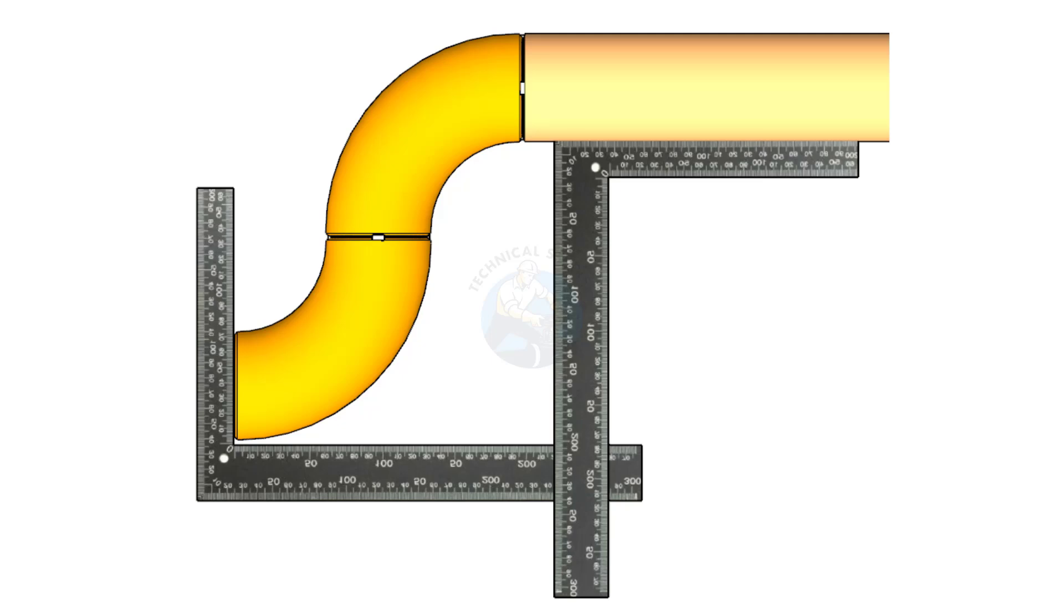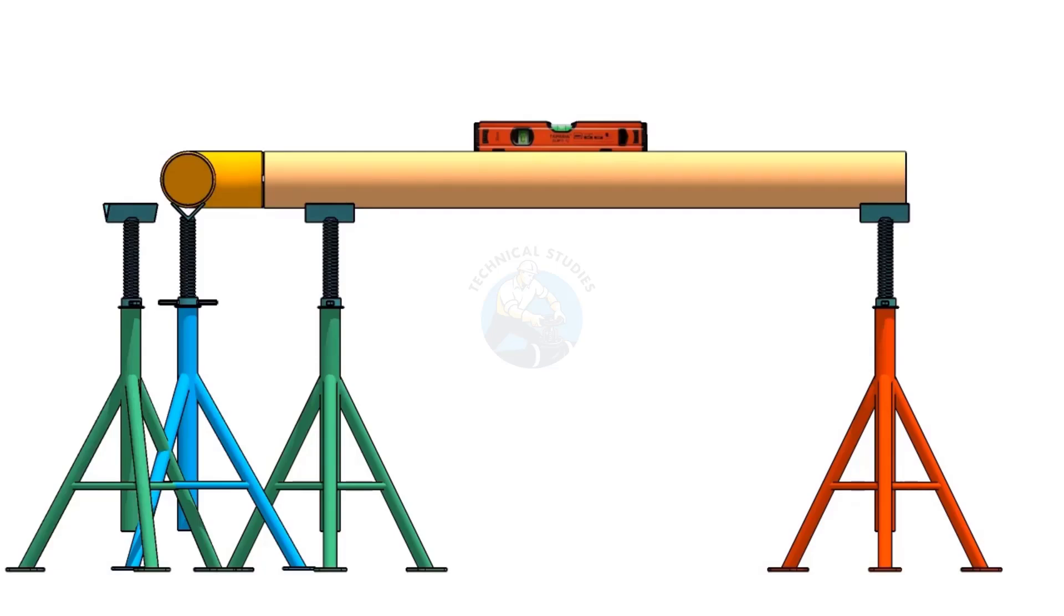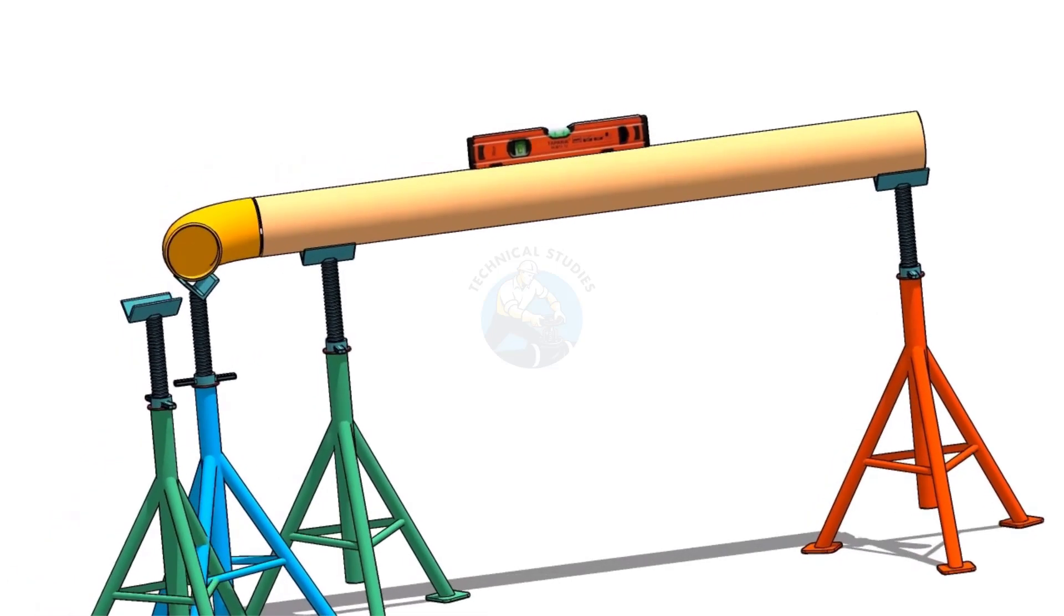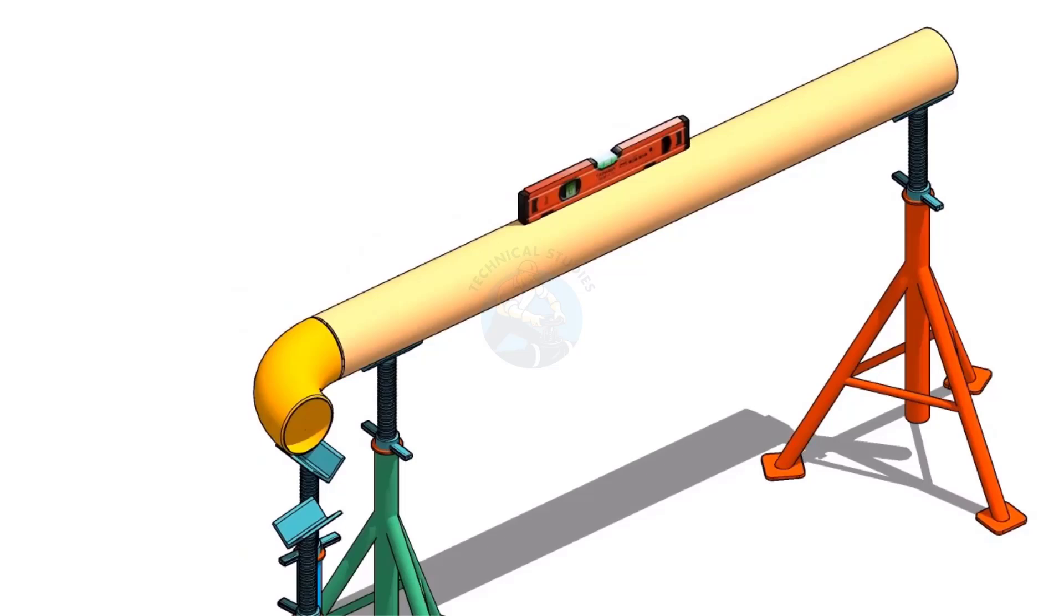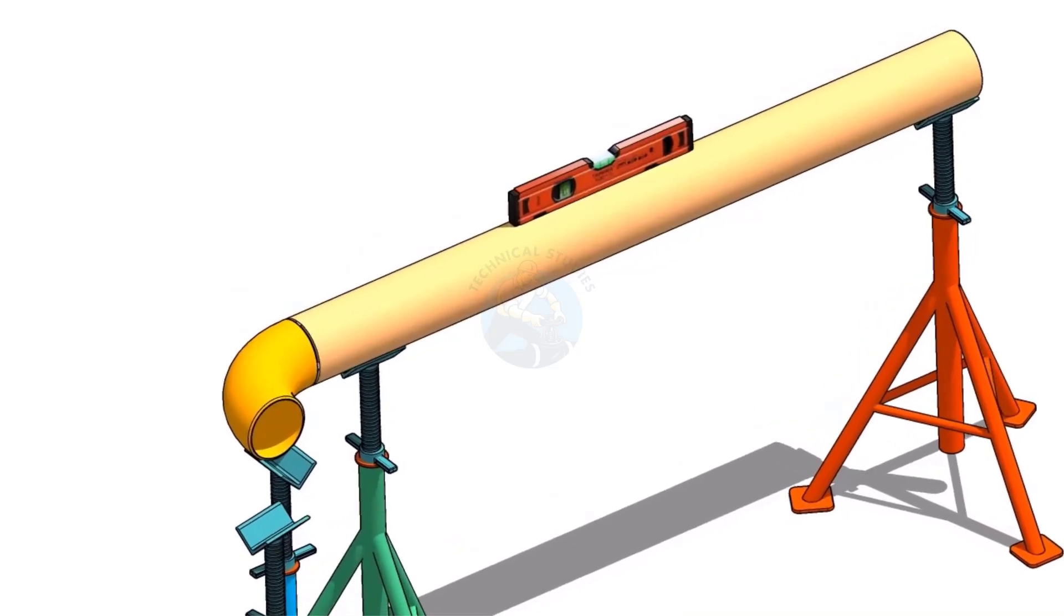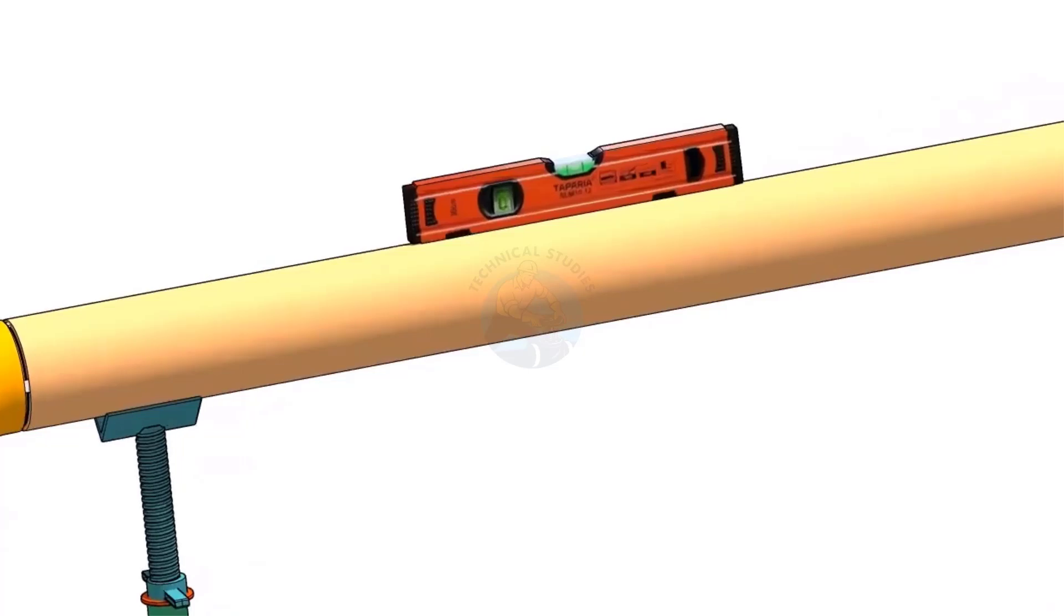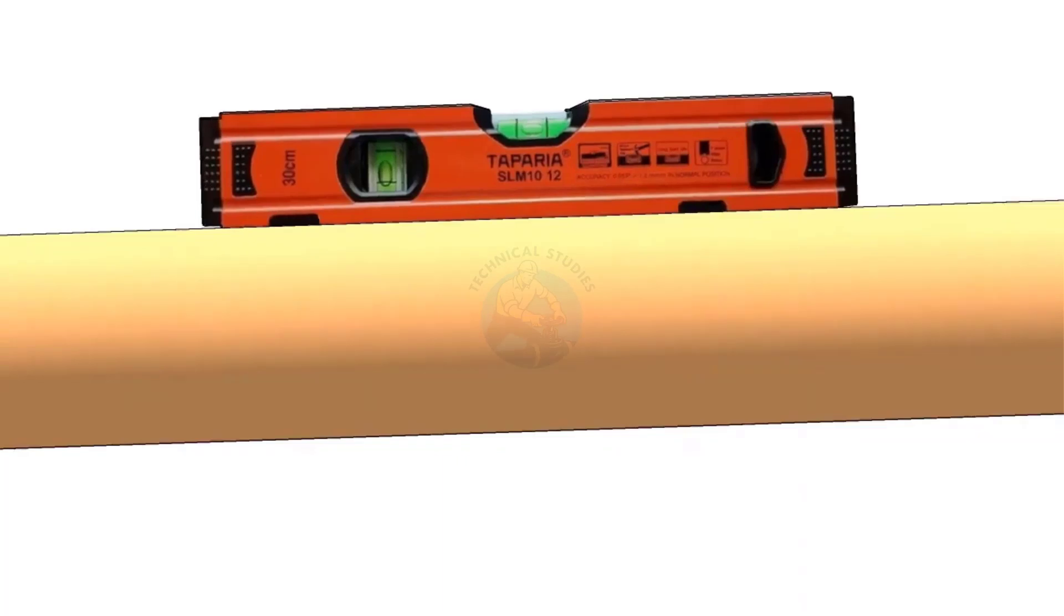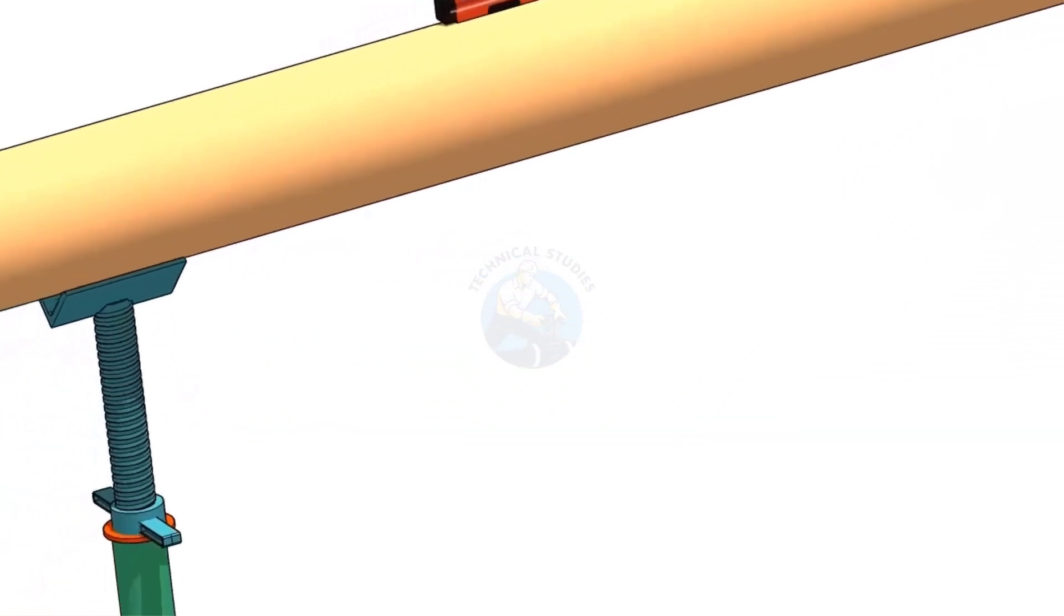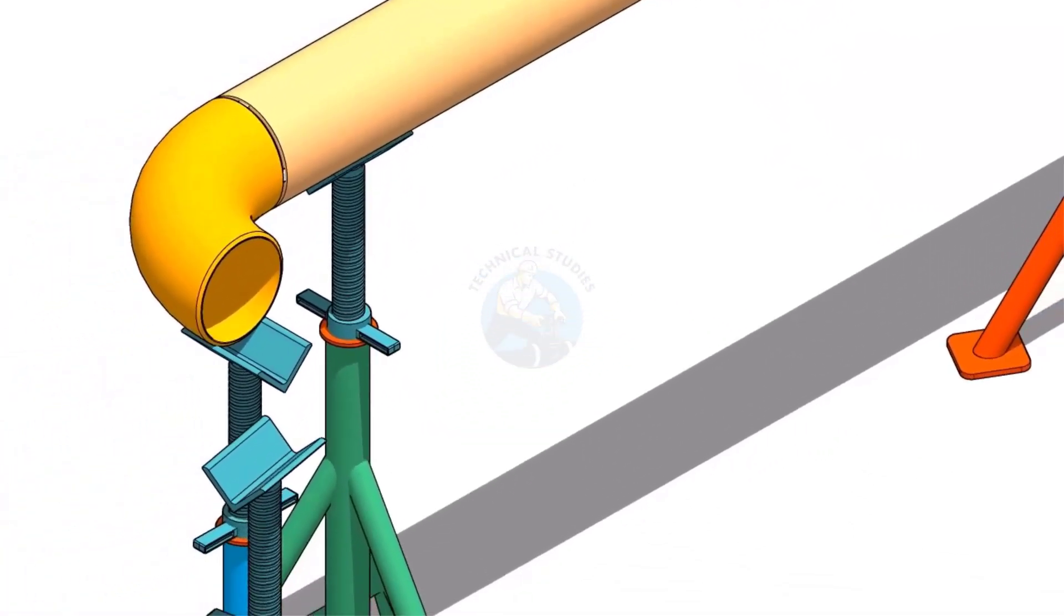In this portion I will show you how to fit up a 90-degree elbow to a fixed 90-degree elbow. Check the level of the spool as shown. Put the elbow on the stand and check the level.